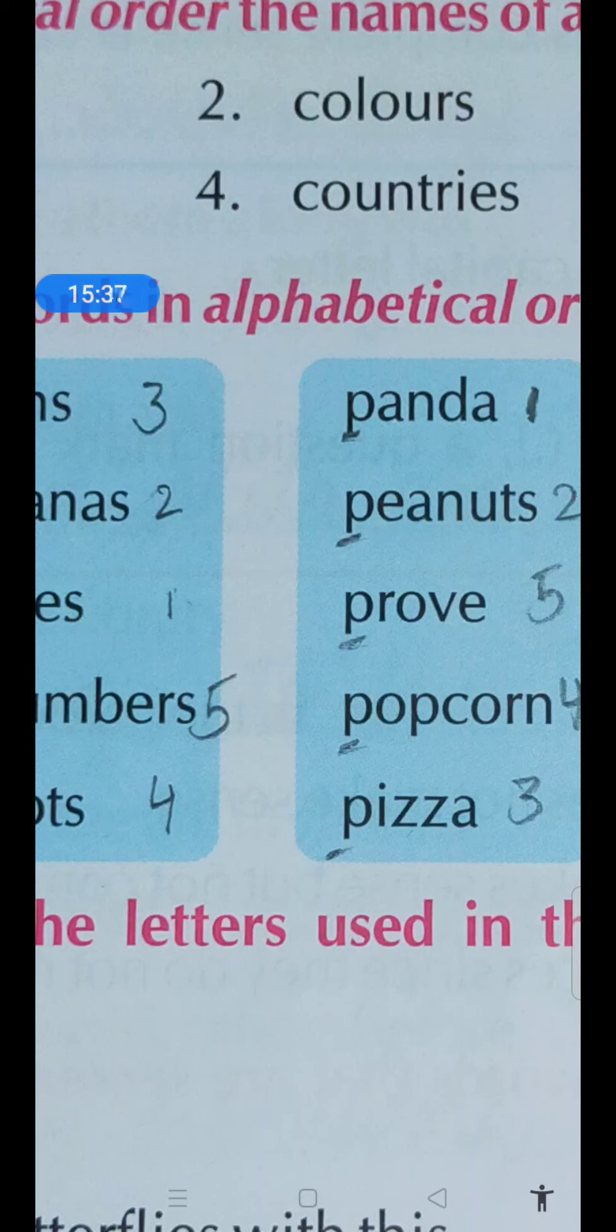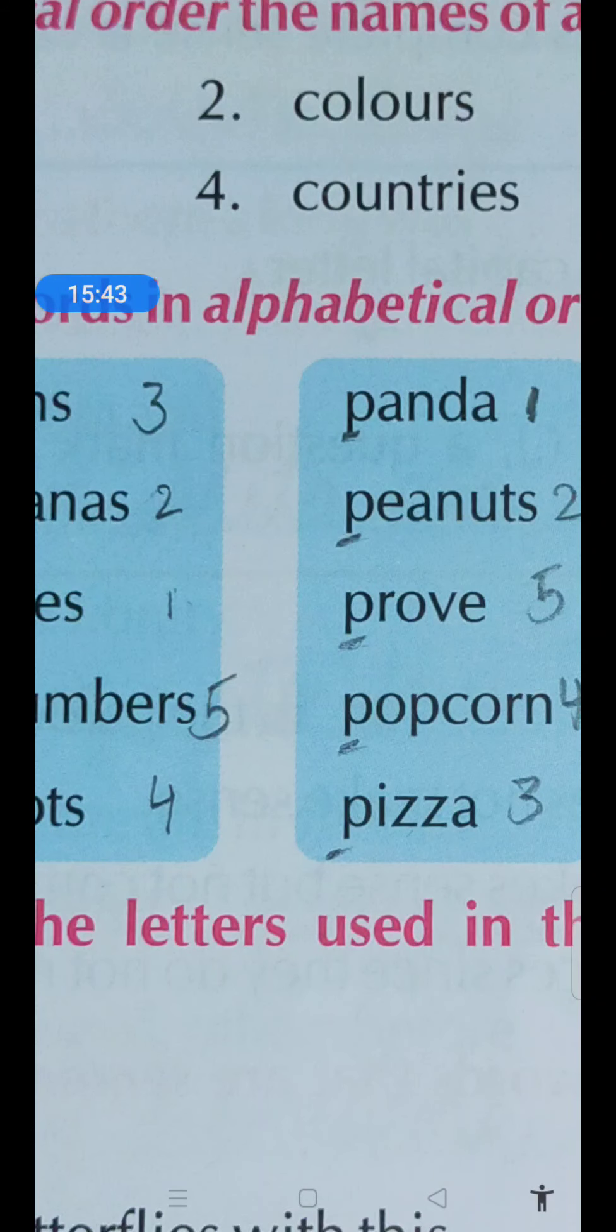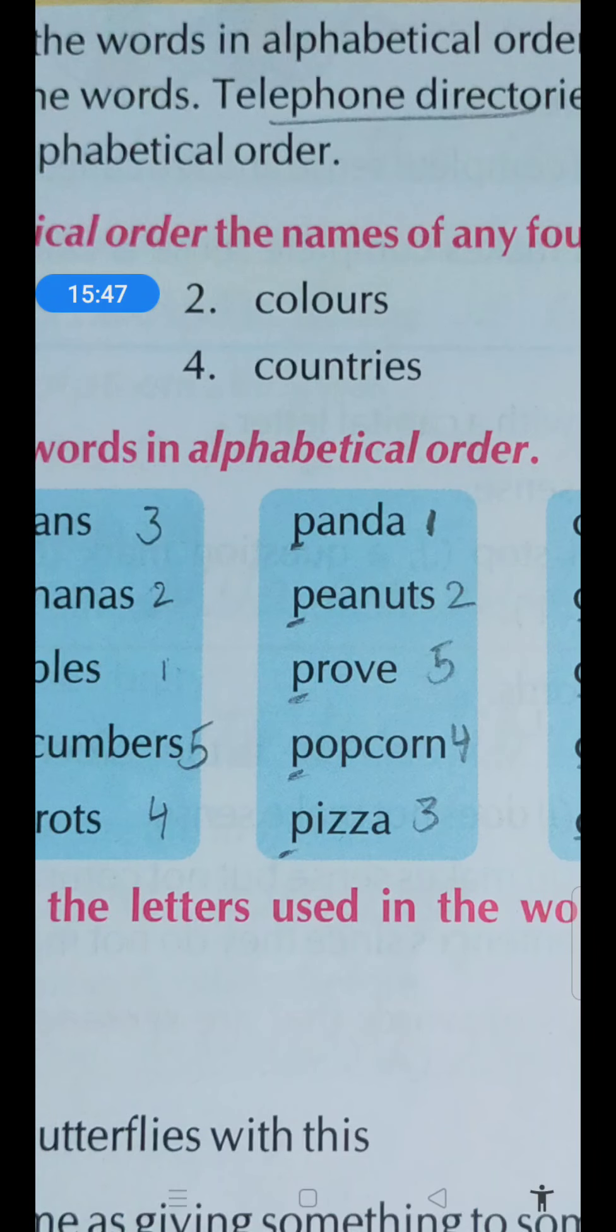Then after E, F, G, H, I - pizza. Then O - popcorn. At last, R we have. We will write prove over here. Is it okay children?